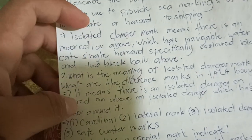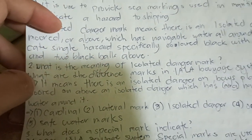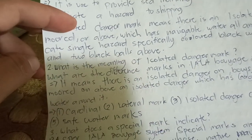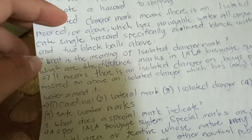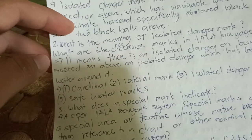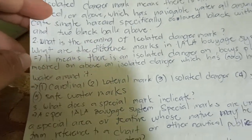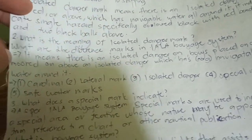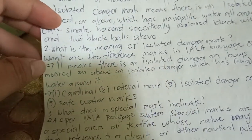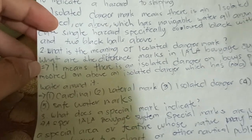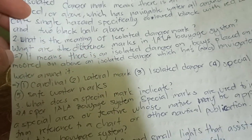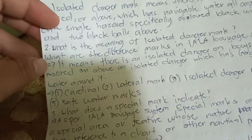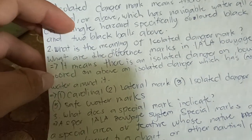Number two, what is the meaning of isolated danger mark? It means there is an isolated danger on buoys placed on or moored above an isolated danger which has navigable water all around it.